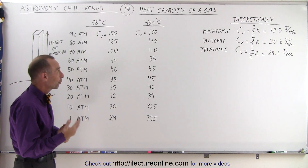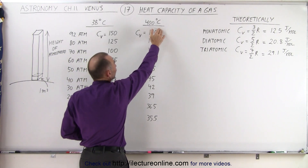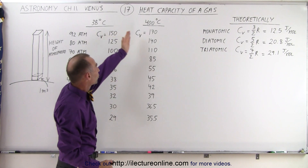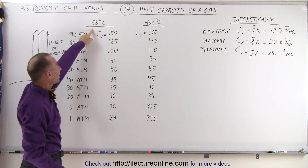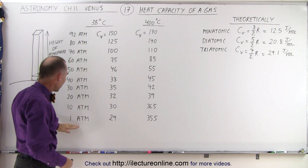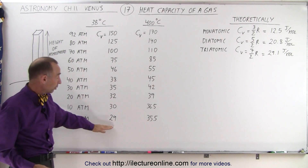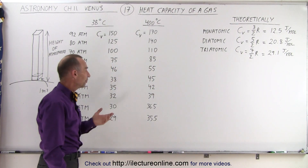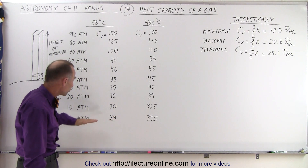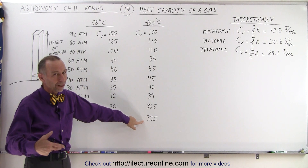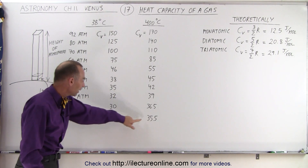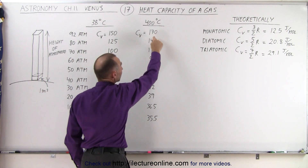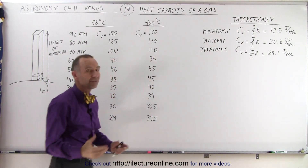We know it's a whole lot warmer on the surface of Venus. At 400°C — which is close to the actual surface temperature of Venus — the numbers are even larger. Also notice that at 38°C and one atmosphere, as found on Earth, the number matches very closely to the theoretical value. But on Venus, even if it had the same pressure as Earth, the heat capacity would already be higher simply because it is warmer. Put the two together, and you get very big values compared to the standard heat capacity of the gas.